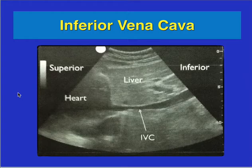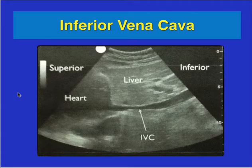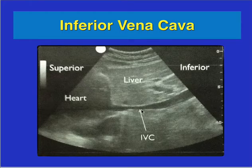One concern with the inferior vena cava is that results depend on whether you're providing positive pressure ventilation or if the patient is breathing spontaneously. If the patient is breathing spontaneously, the IVC should collapse if volume is low, or should be small. If you're providing positive pressure ventilation, then the IVC should expand slightly.